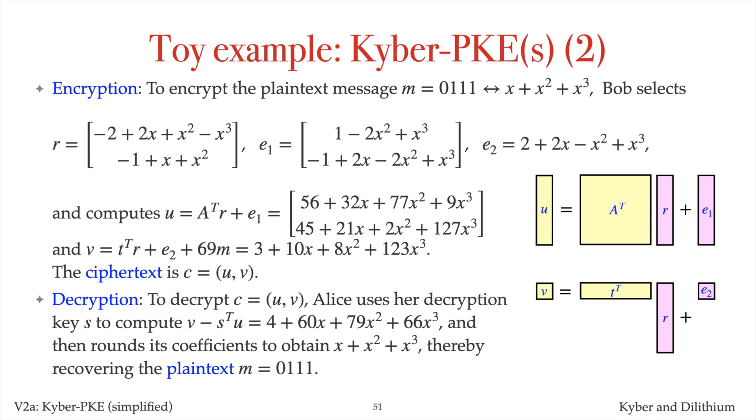To decrypt C, Alice uses her decryption key S to compute V minus S transpose times U, and then rounds the coefficients of the resulting polynomial, obtaining the polynomial x plus x squared plus x cubed. Thus, the plaintext is 0, 1, 1, 1.